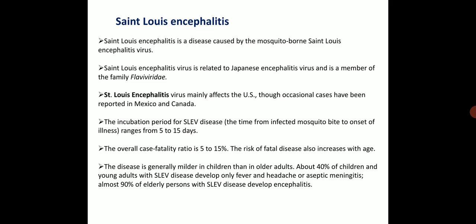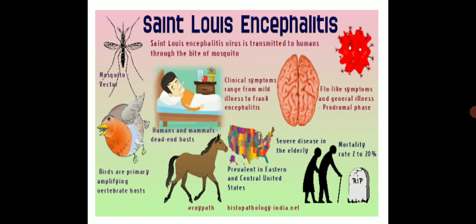Whereas 90 percent of elderly persons with this disease develop encephalitis — inflammation of the brain. St. Louis encephalitis is transmitted to humans through the bite of a mosquito. Birds are the primary amplifying vertebrate host. Humans and mammals are the dead-end host. Clinical symptoms range from mild illness to frank encephalitis. Flu-like symptoms and general illness are also seen in the case of St. Louis encephalitis.